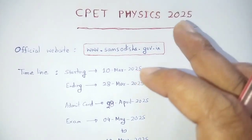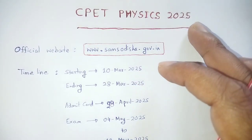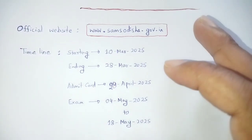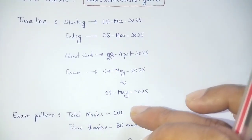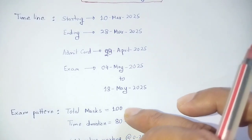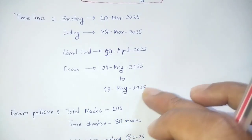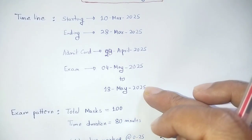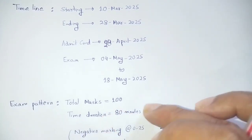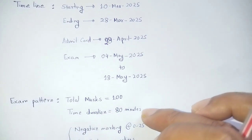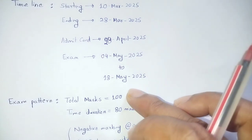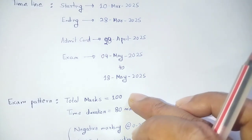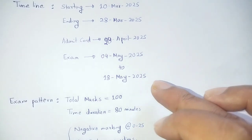Now we have to discuss about physics. The exam pattern: total marks is 100, time duration is 80 minutes — 80 minutes for 100 marks.